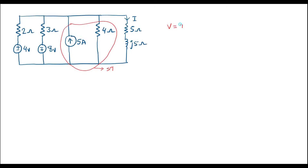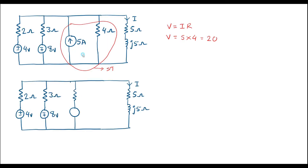We know that V = I × R. So V equals 5 amperes into 4 ohms, giving a magnitude of 20 volts. This 20 volt voltage source will appear in series with the 4 ohm resistor. Let me redraw the circuit. Since the arrow mark points upward, this end is positive and the other is negative. Now we can see that all voltage sources have a resistor in series with them and those combinations are in parallel.